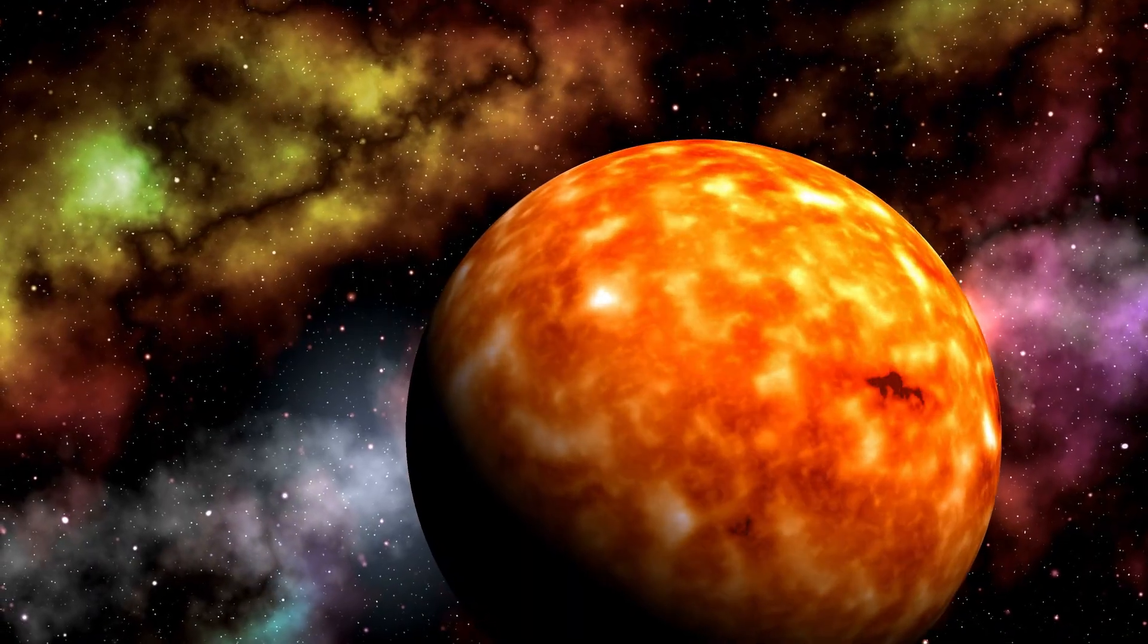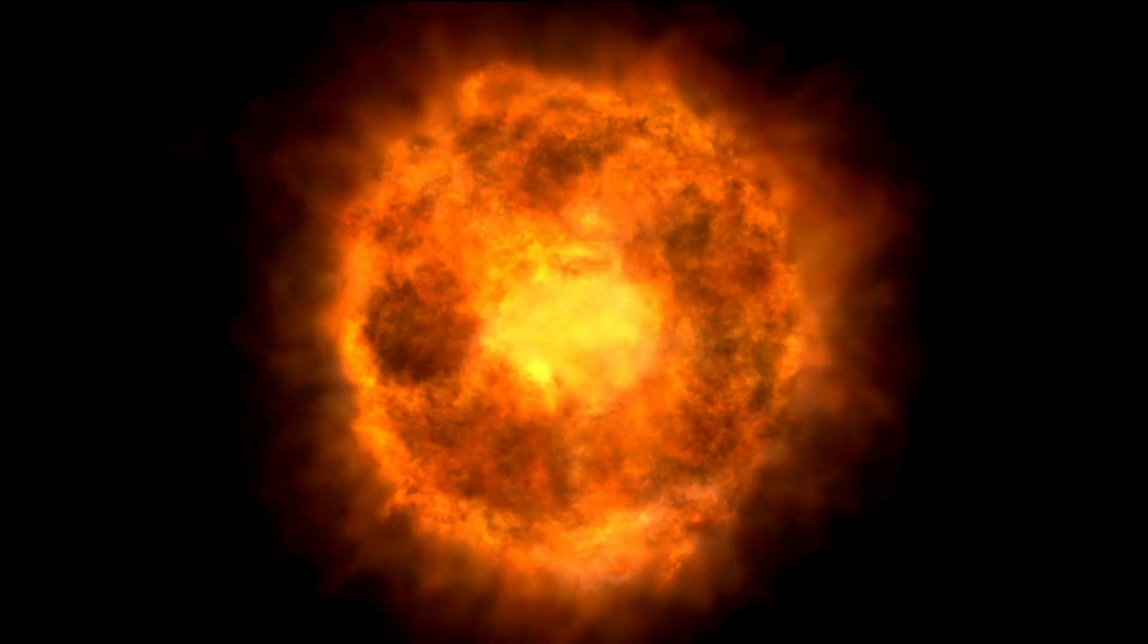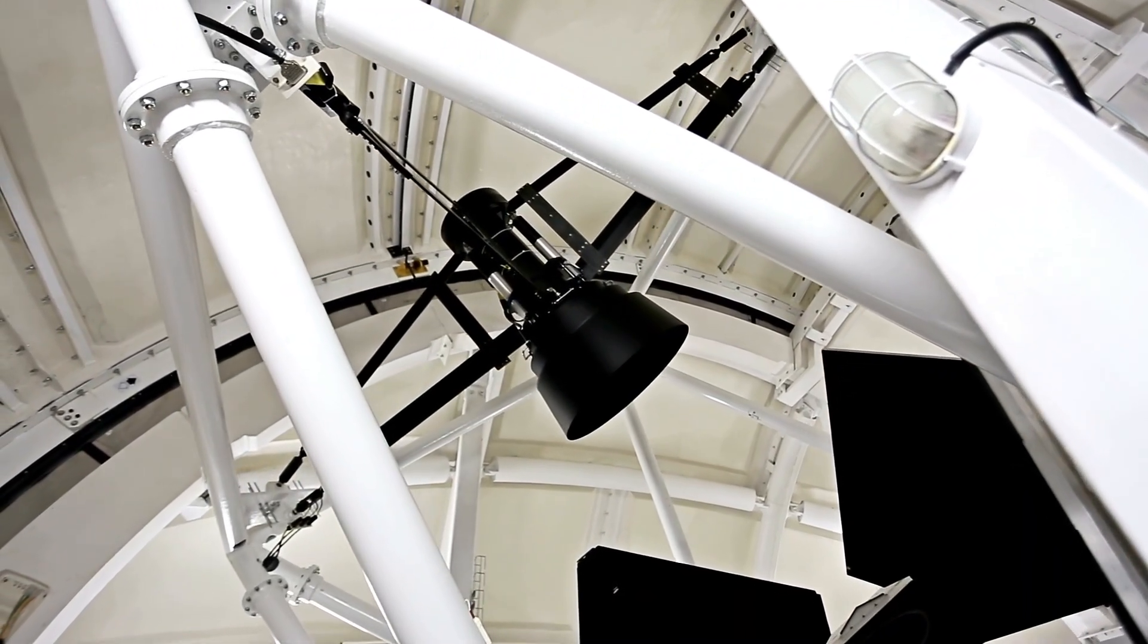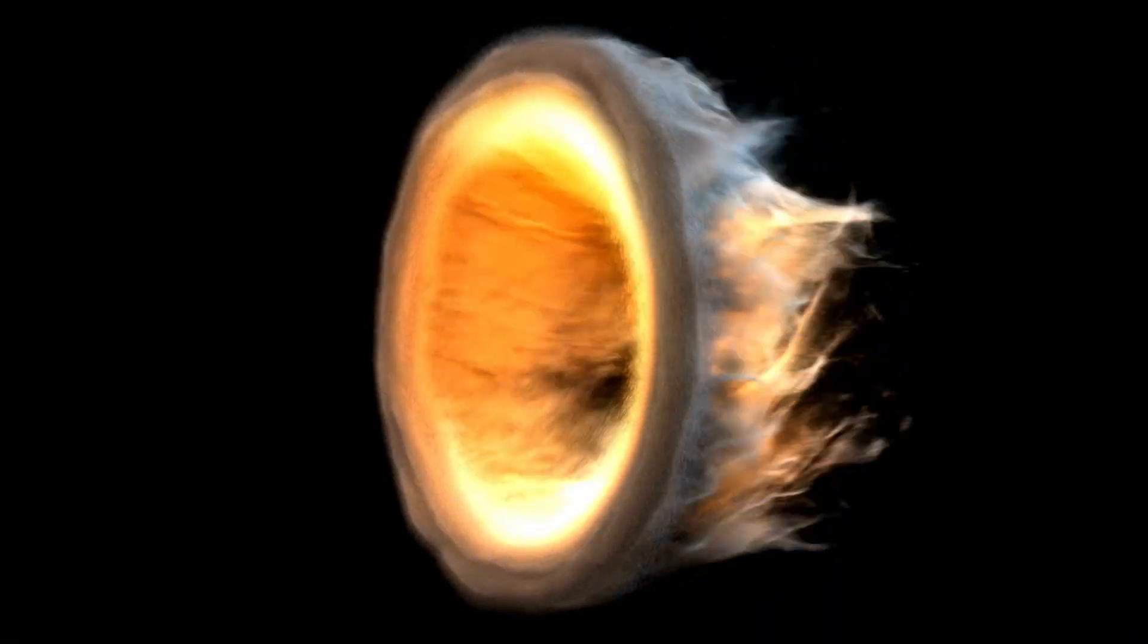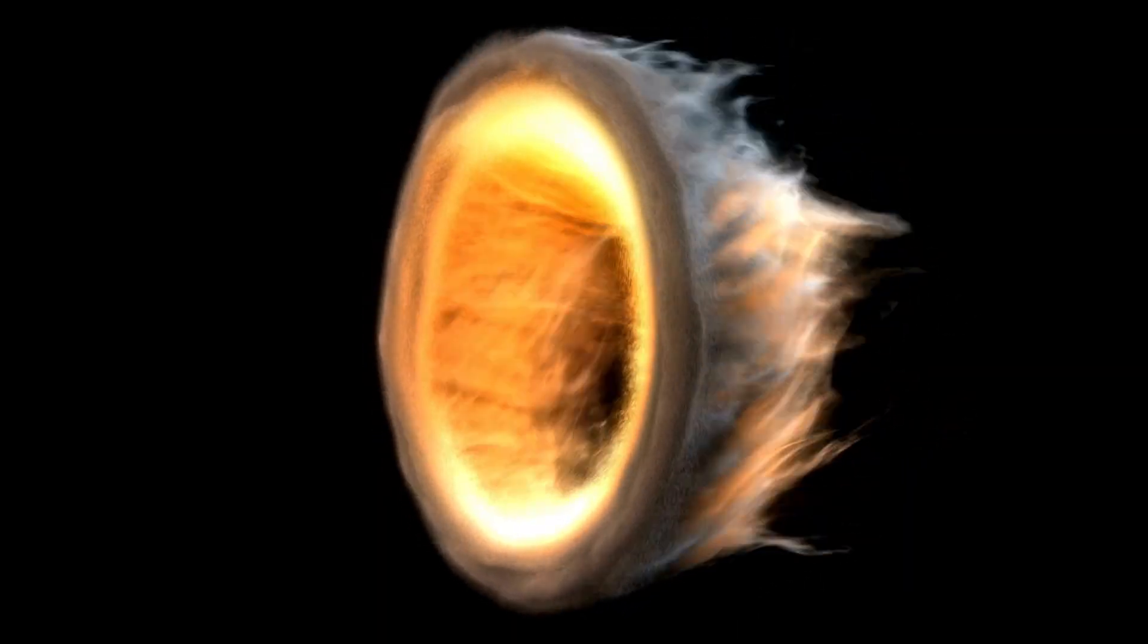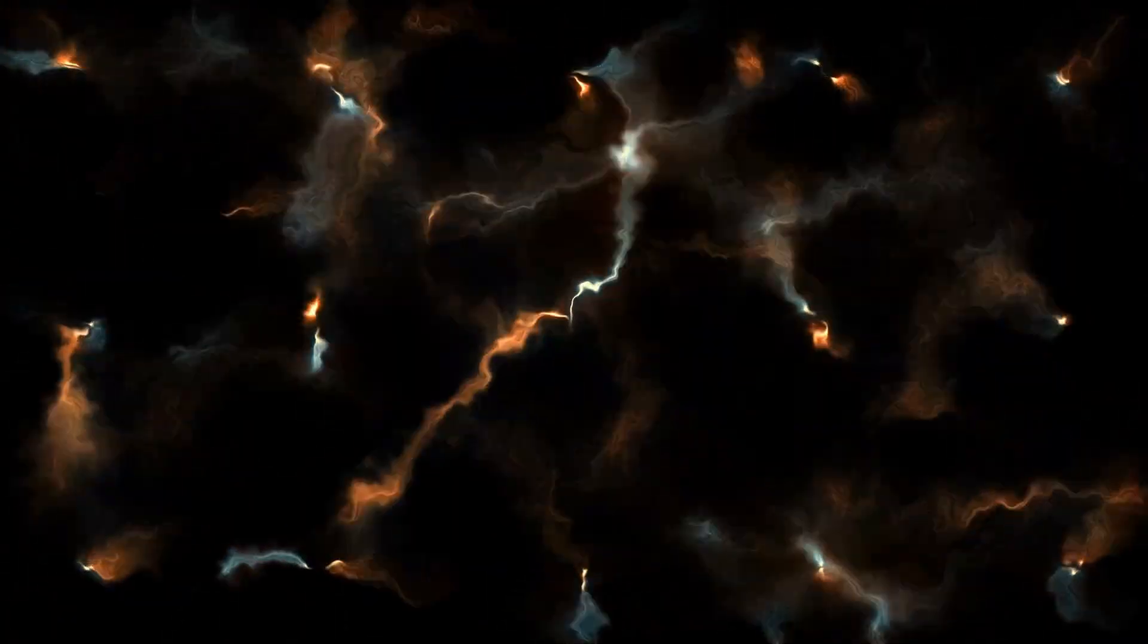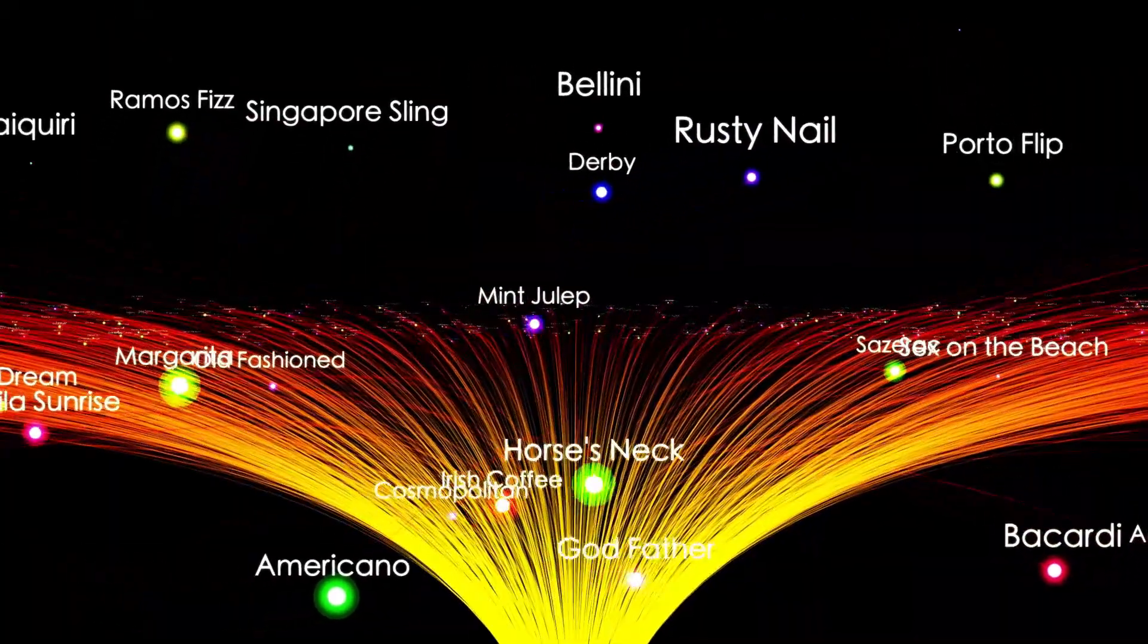If Betelgeuse were to explode, the spectacle would be unparalleled in human history. The supernova would be so luminous that it could be seen during daylight hours and would likely outshine the full moon for weeks. Despite the magnitude of such an event, Betelgeuse's distance from Earth is sufficient to ensure that it poses no threat to life on our planet. Instead, it would offer a once-in-a-lifetime scientific opportunity: a real-time observation of a nearby supernova, providing a treasure trove of data and insight into the complex mechanics of stellar death.